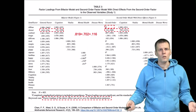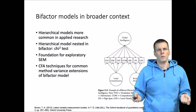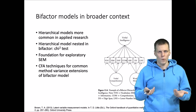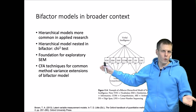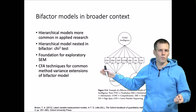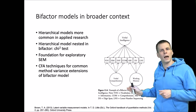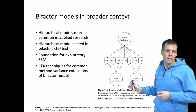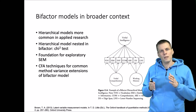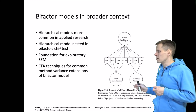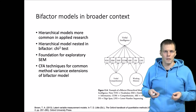In the broader context, bifactor models may not always be called by that name but are applied quite commonly in management research, particularly for modeling method variance. In method variance models, one general method factor affects all indicators, and the substantive factors of interest are the minor factors. That model is somewhat problematic because method variance analysis typically allows these minor factors to be correlated, which leads to issues I'll discuss in another video.